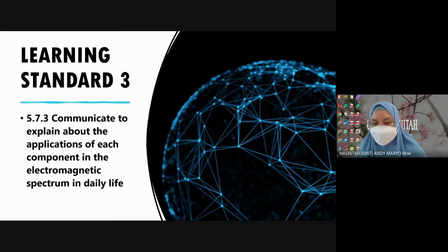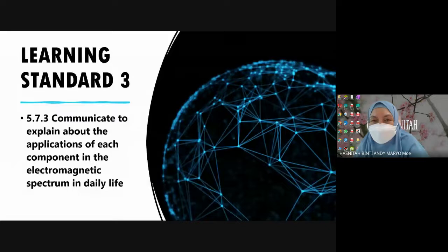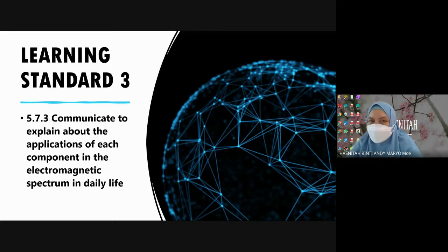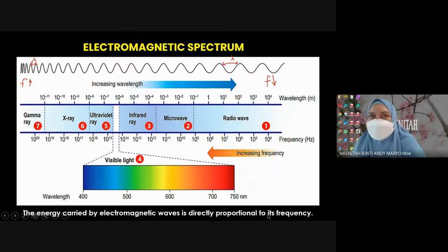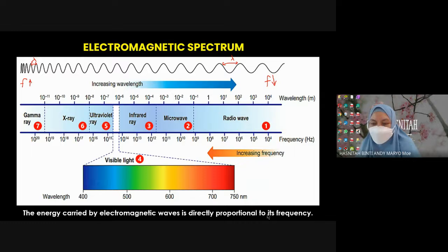Number two: radio wave has the longest wavelength and is a low frequency wave, so it carries low energy. The energy carried by EM waves is directly proportional to frequency - high frequency means high energy, low frequency means low energy. So radio wave carries low energy. Number three: gamma ray has the shortest wavelength but high frequency. Why does gamma have high frequency? Because it has high frequency - inversely related to its short wavelength. Gamma ray has shortest wavelength and highest frequency, hence highest energy.